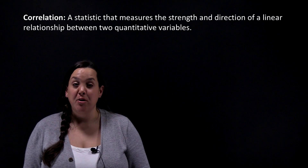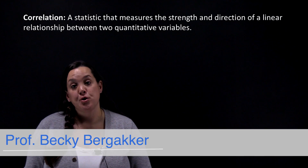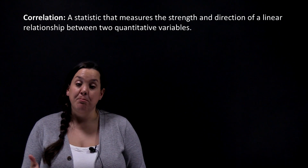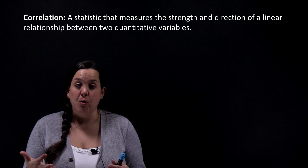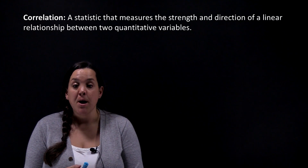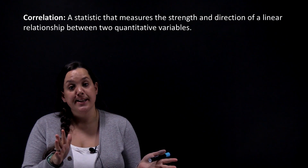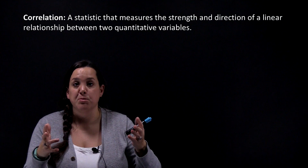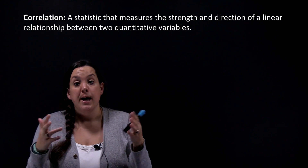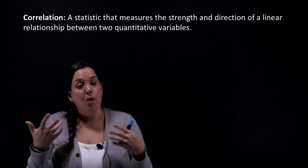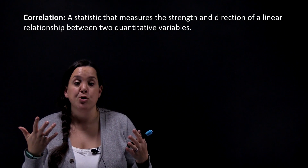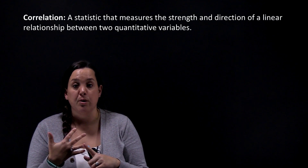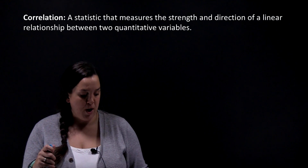Today we're continuing our discussion of two quantitative variables. We've talked about how you can measure or look at how strong or weak a relationship is between them, and we looked at using a scatterplot to gauge subjectively how tight or loose the pattern is. Today we're going to talk about a measurement called the correlation coefficient, which measures not only strength but also the direction of the linear relationship between two quantitative variables.